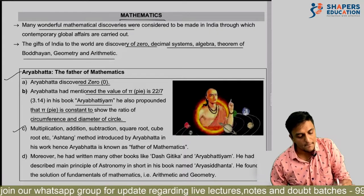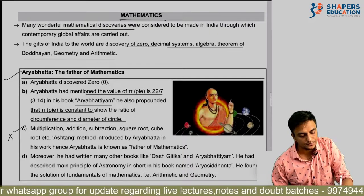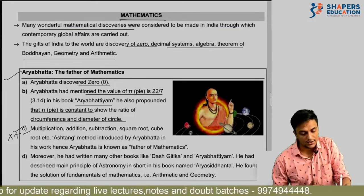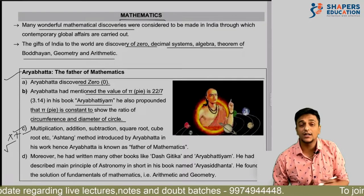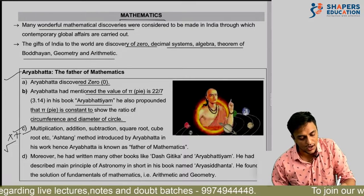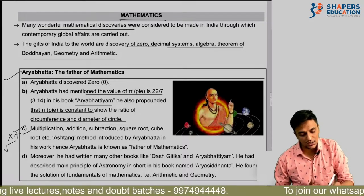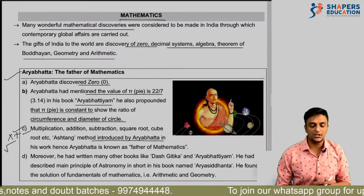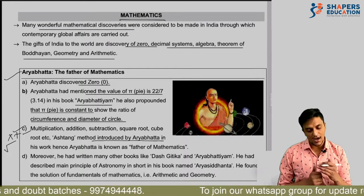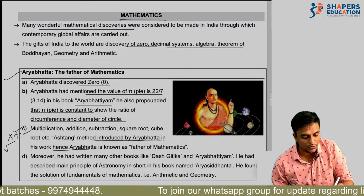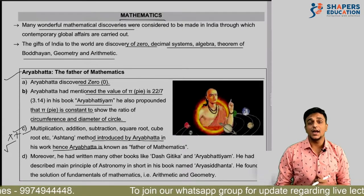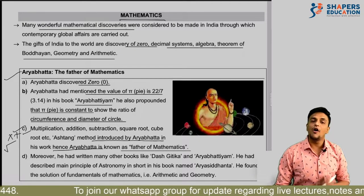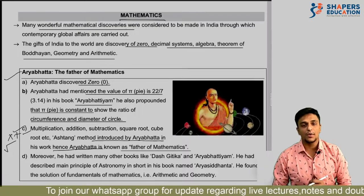Aryabhatta introduced methods for multiplication, addition, subtraction, square root, and cube root — the Ashtang method — all mentioned and introduced in his book. That is why Aryabhatta is considered the Father of Mathematics. He wrote many books, including Aryabhattyam and Dashgitika. He described the main principles of astronomy related to planetary movement, and his book also contains Arya Siddhan and fundamentals of mathematics including arithmetic and geometry solutions.